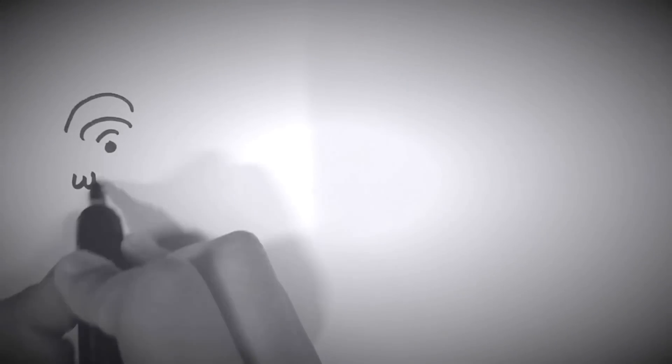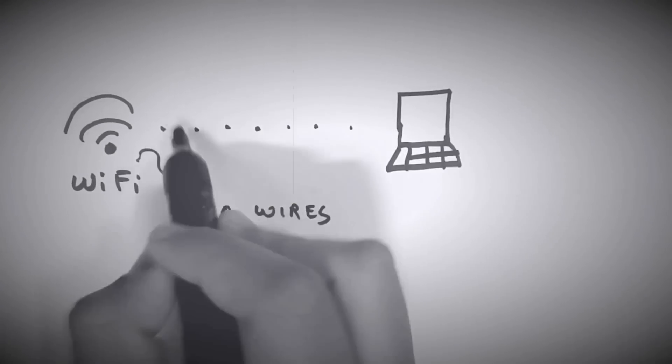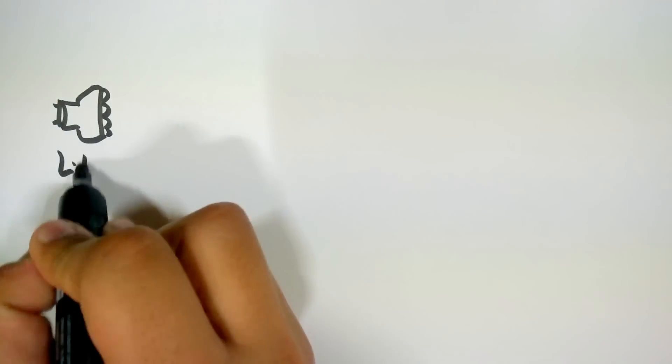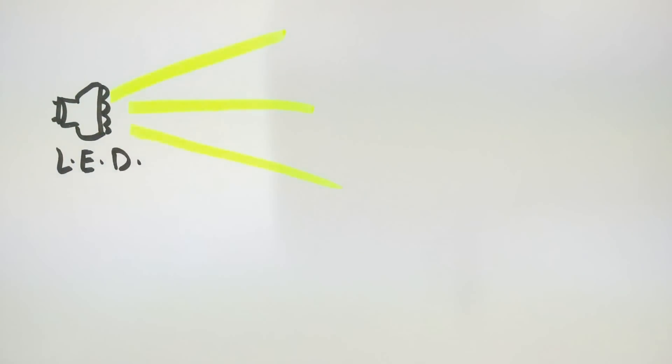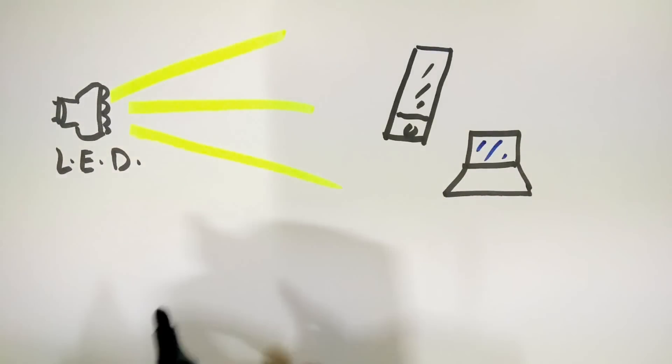If you have watched the Wi-Fi video, you know that Wi-Fi uses high and low pulses of electromagnetic waves to send data from the internet to your computer. Similarly, Li-Fi uses fluctuations in the intensity of light to transmit data to your phone or your computer. But why should you use Li-Fi over Wi-Fi?